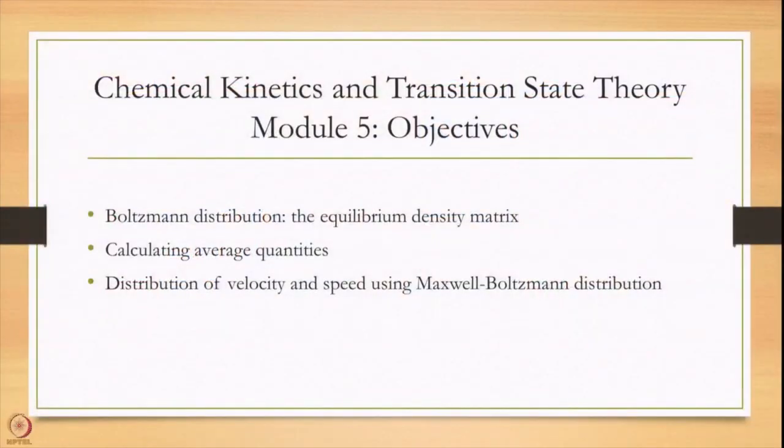Hello and welcome to module 5 of Chemical Kinetics and Transition State Theory. Today we are going to use the dynamics in phase space that we learnt in the last module and calculate what is the equilibrium density matrix. This is a very famous relation attributed to Boltzmann. We will use this equilibrium density matrix to calculate average quantities and then calculate the Maxwell-Boltzmann relation.